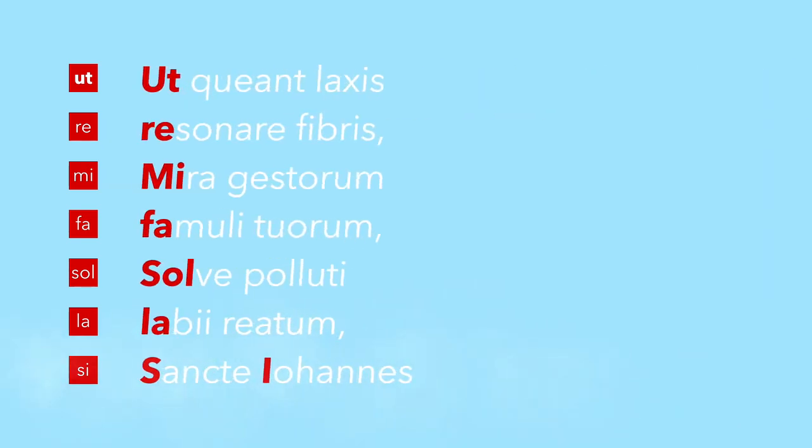The note Do was originally called Ut. These labels are actually the first syllable of each line in the Gregorian chant Ut Queant Laxis.